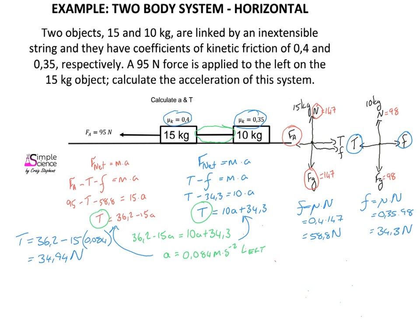We are normally asked for the magnitude of the tension because the tension force acts in two directions depending on which object we are referring to. By following the same procedure every time: draw a free body diagram for each object, calculate unknown forces such as friction, write a Newton's second law expression for each object, then solve for one unknown and use it to find the other. Done.